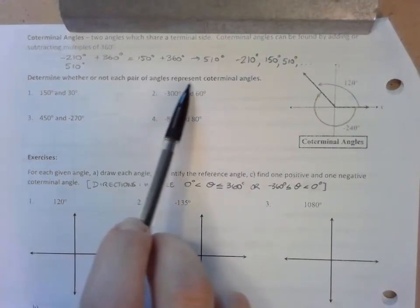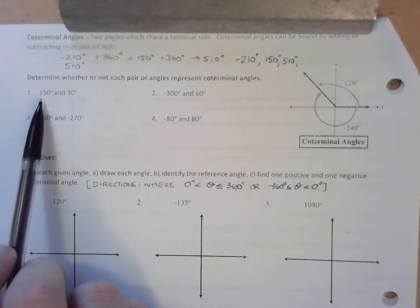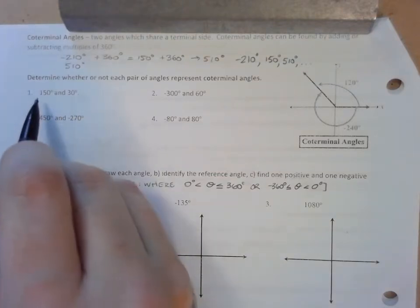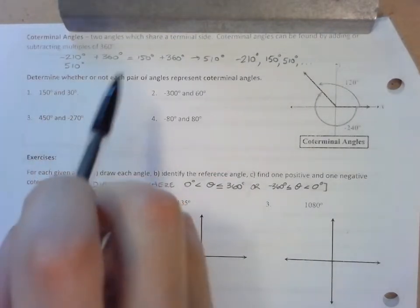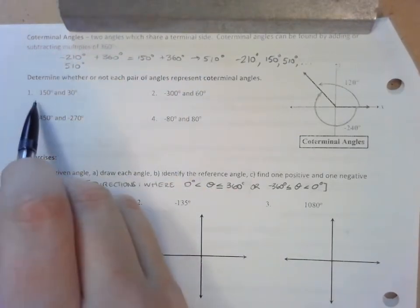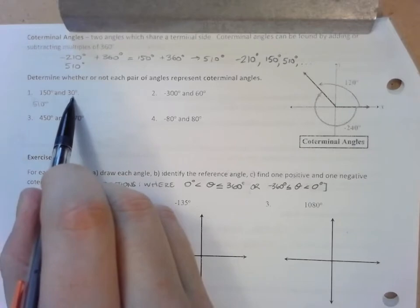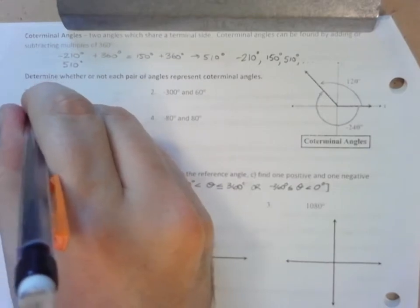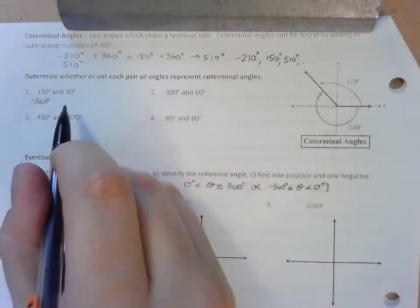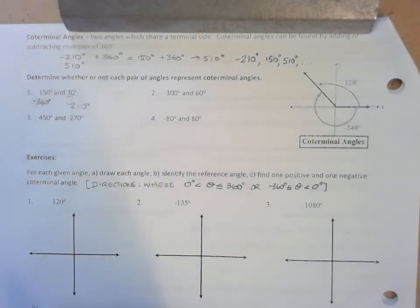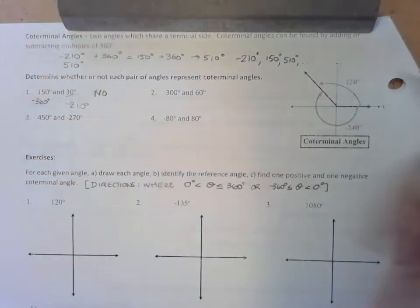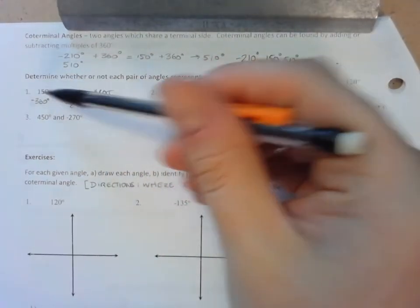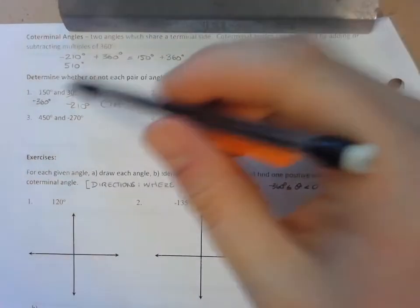Determine whether or not each pair of angles represent coterminal angles. We can do this by adding and subtracting multiples of 360. For 150 and 30: if I add 360 to 150, that gets me 510. So that doesn't help me figure out if 30 is coterminal. If I subtract 360 from 150, that gives me negative 210. I've already gone past this angle, so these are not coterminal angles because adding and subtracting 360 didn't get me the 30.